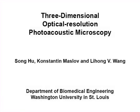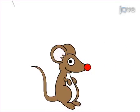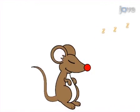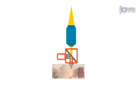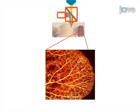The overall goal of this procedure is to demonstrate in vivo optical resolution photoacoustic microscopy, or ORPAM, of microcirculation that is non-invasive and label-free. This is accomplished by first anesthetizing the experimental animal. The second step of the procedure is to position the region of interest by translating the imaging head of the optical resolution photoacoustic microscope. Scanning parameters are then set and image acquisition is initiated.